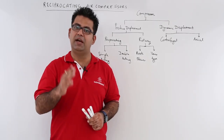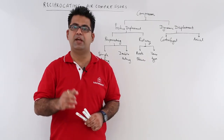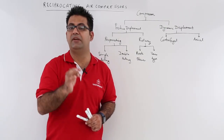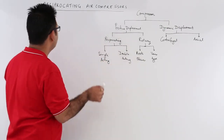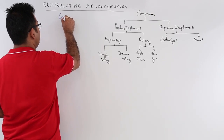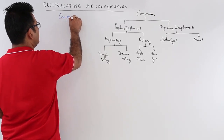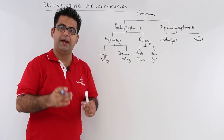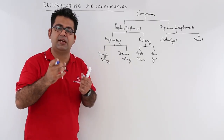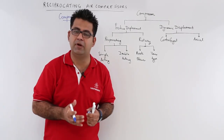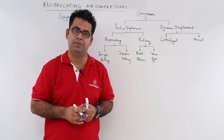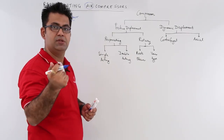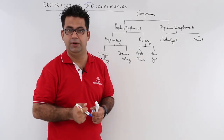In this video, we start discussing about air compressors. Before we do that, let's have a look at what a compressor is. A compressor is basically an energy-consuming device. It consumes energy, meaning it requires a prime mover to run. We are dealing with air compressors here, which use air as a working fluid.